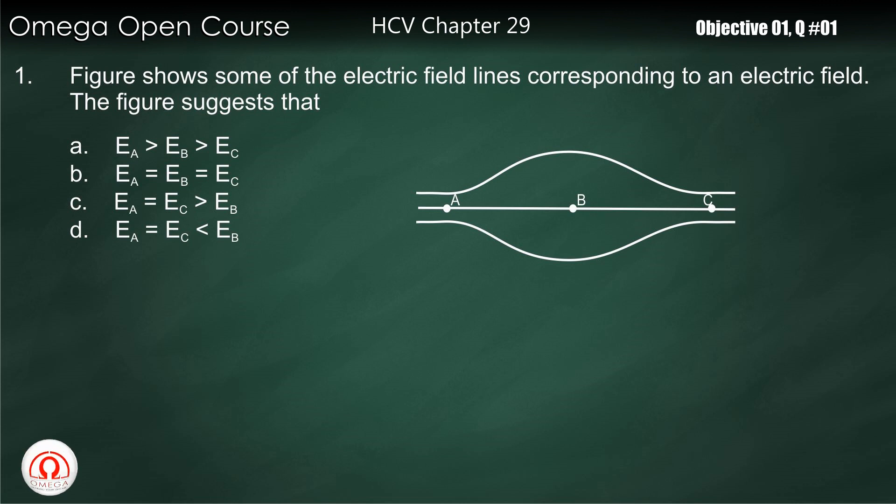Applying this logic, we can clearly see the magnitude of electric field at A and C are equal, at B is lesser than A and C. Thus, our answer is C.